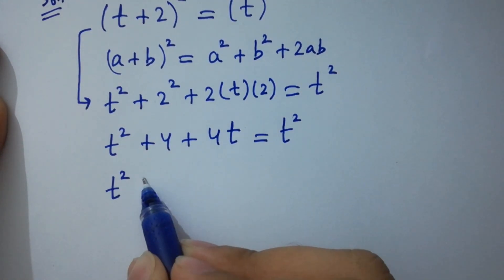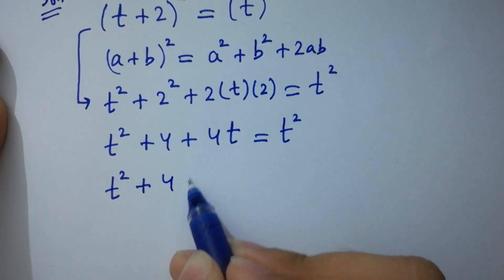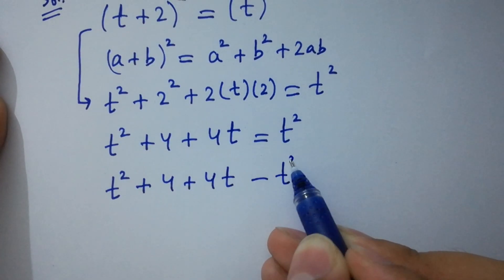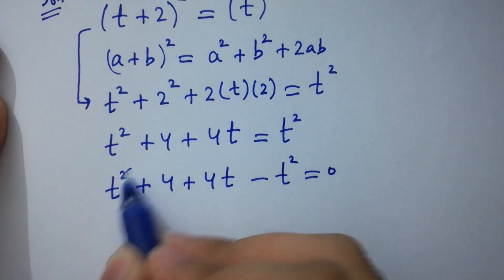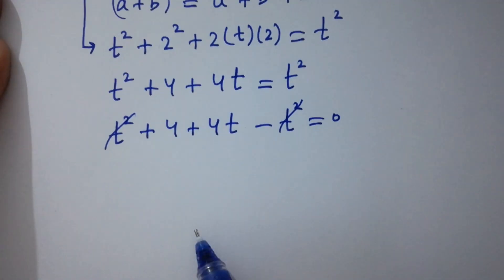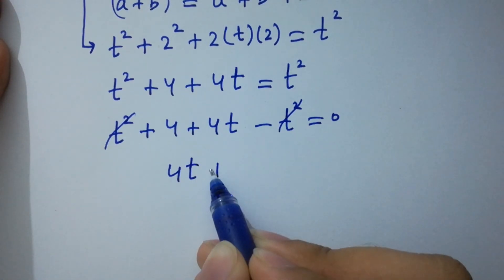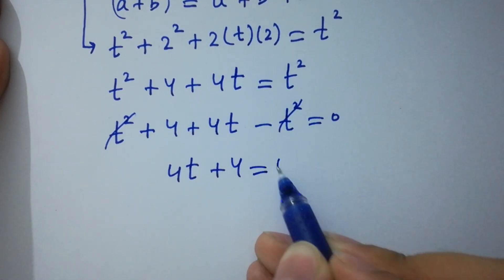t square plus 4 plus 4t minus t square equals 0. t square and t square cancels. We get 4t plus 4 equals 0.